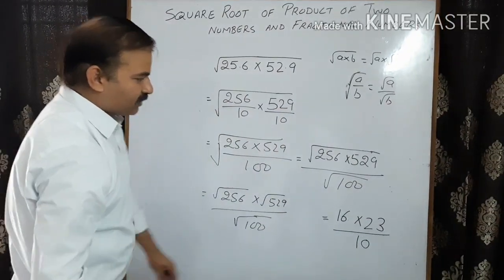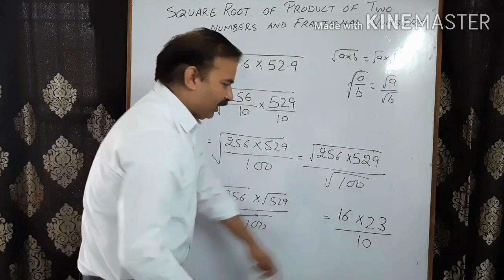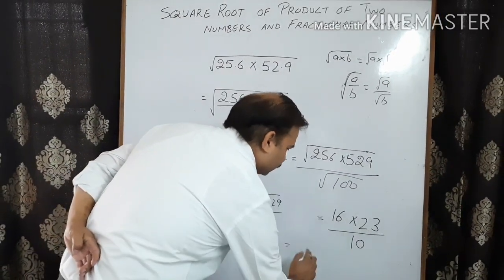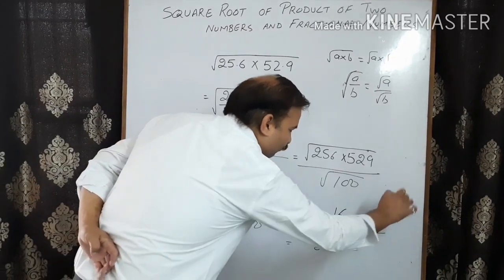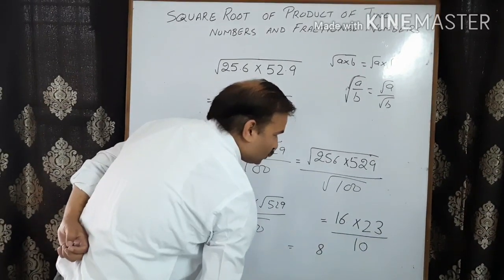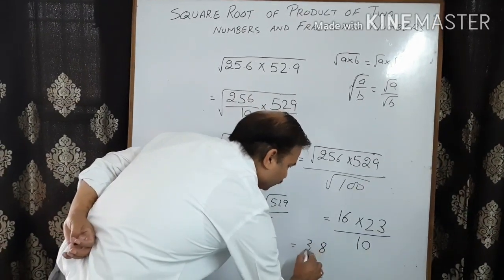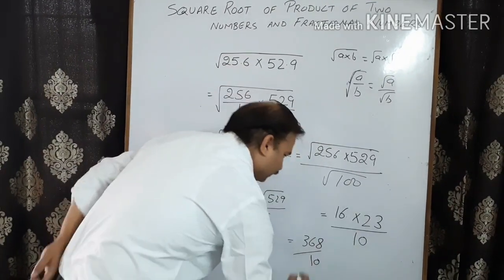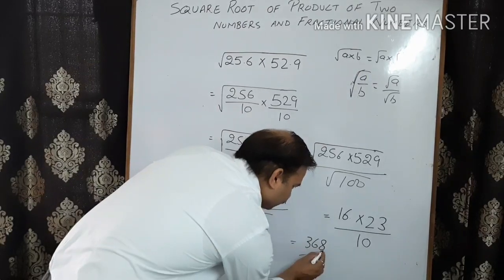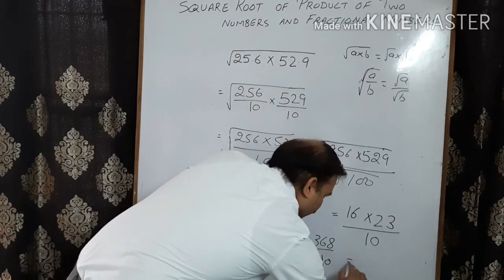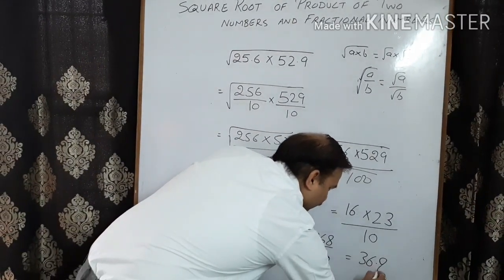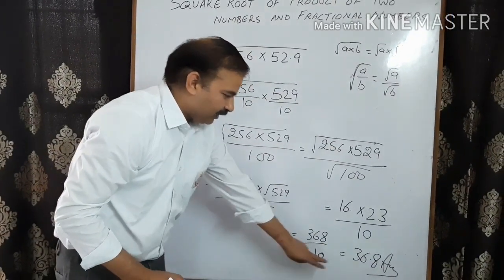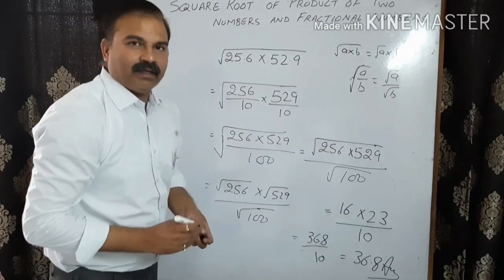Now multiply: 16 multiplied by 23 — 3 times 6 is 18, carry 1; 3 times 1 is 3 plus 1 is 4; 2 times 6 is 12; 2 times 1 is 2 plus 1 is 3 — giving 368. Divide by 10, so the complete answer is 36.8.